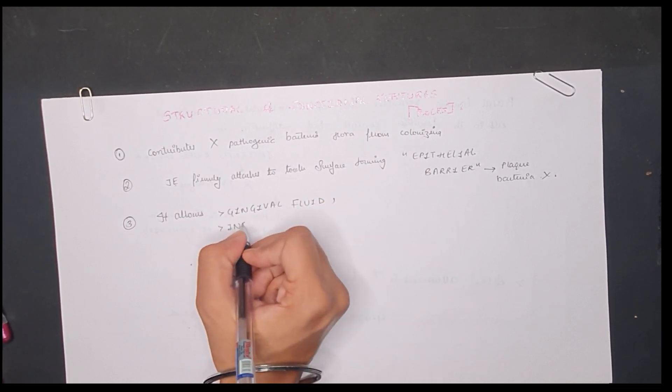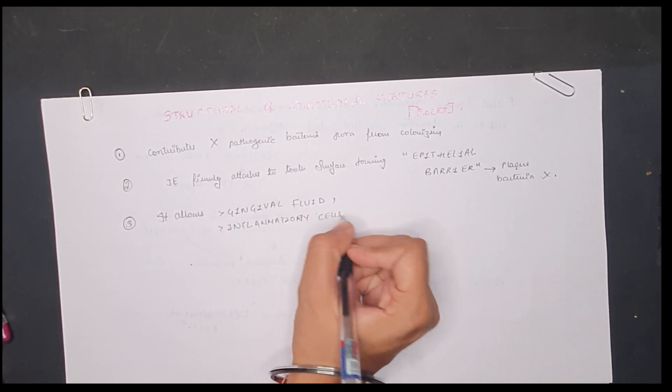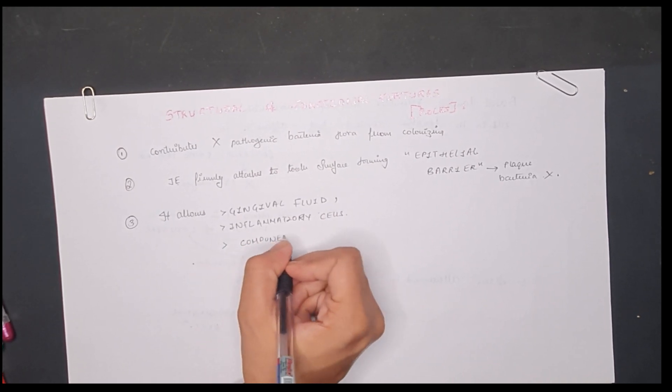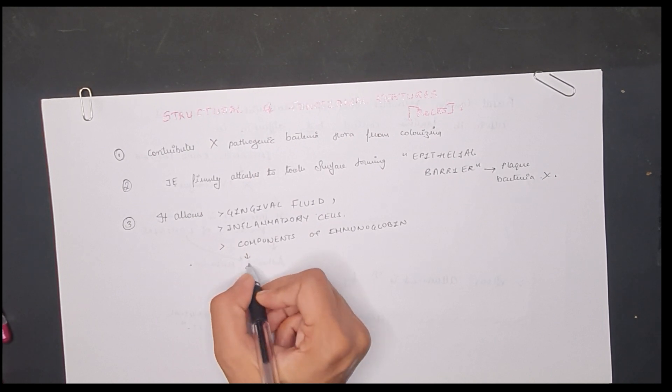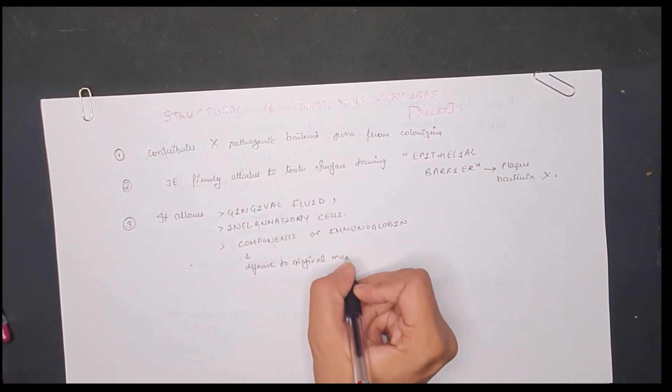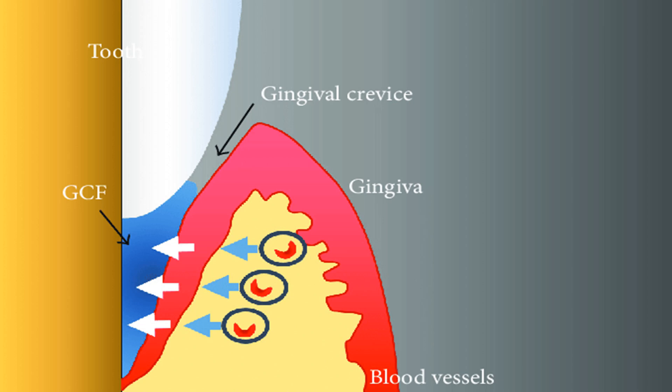Let's see this picture which shows the permeability. As you can see, the gingival crevice, the gingival crevicular fluid, and the tooth—you can see that the junctional epithelium, which is in red with the white marks present, allows the permeability of the gingival fluid and the inflammatory cells in case of any harm to the junctional epithelium.